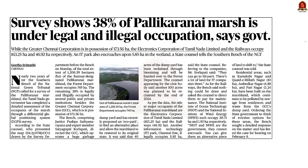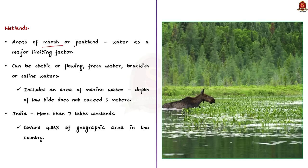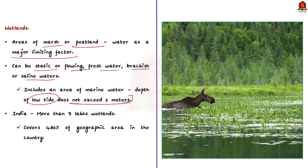Look at this news article. A Tamil Nadu government survey shows that 38% of Pallikarani marshland is under legal and illegal occupation by occupants including government departments like Railways and ELCOT, and private players. In our analysis, let us see about the importance of wetlands and various steps to conserve them. Wetlands are areas of marsh or peatland with water as a major limiting factor. This water can be static or flowing, freshwater, brackish, or saline. It also includes marine water areas where the depth at low tide does not exceed 6 meters. In India, there are more than 7 lakh wetlands, covering 4.86% of India's geographic area.